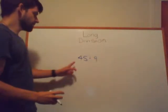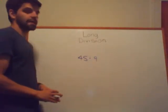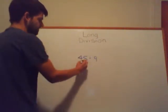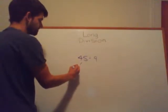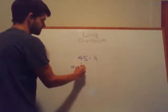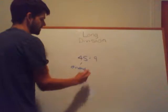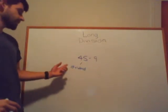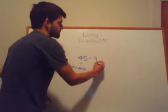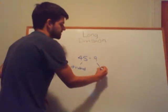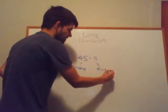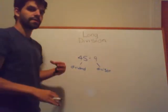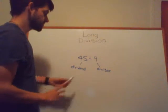Let's say I have 45 divided by 9. The number that's being divided — in this case 45 — is known as your dividend. The number that your dividend is divided by is known as your divisor. So again, the number being divided is the dividend, and the number it's divided by is your divisor.